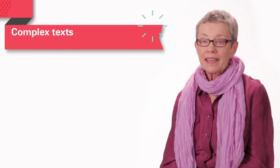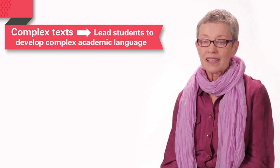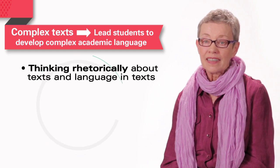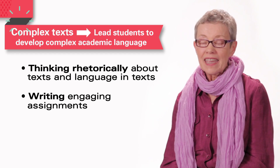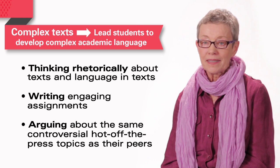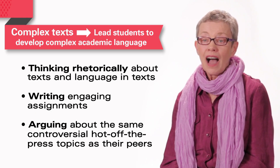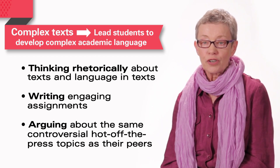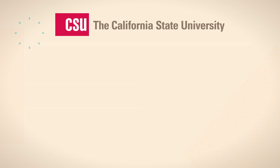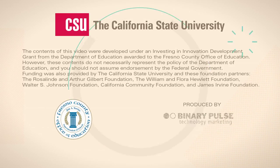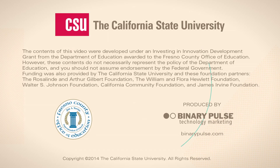Thinking about complex text leads to the development of complex language skills. You'll want to have students thinking rhetorically about texts and the language in the text that they're reading, writing engaging writing assignments, and arguing about the same hot-off-the-press topics as their peers. Thank you. I hope this resource will help you use the ERWC effectively with your English learners.